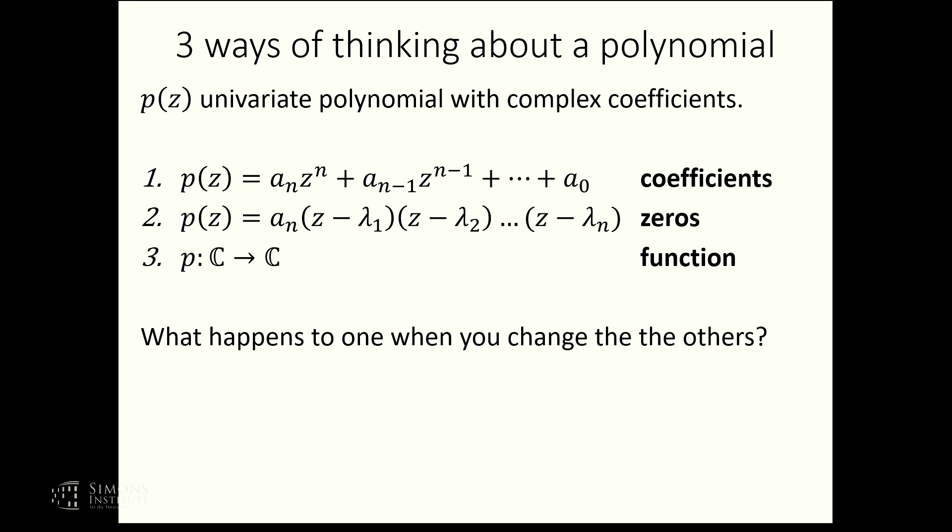But then there's this other way, which is instead of writing it as a sum, you can write it as a product, and the factors in the product tell you what the zeros of the polynomial are. So this is an alternate representation in terms of zeros. And then finally, you can also just think of the polynomial as a function from complex numbers to complex numbers. So you can think of this object in three different ways. And once you have this, you can ask all sorts of questions, like what happens to one of these things when I change some of the other ones. Like if I apply some transformation of the coefficients, what happens to the zeros and vice versa.